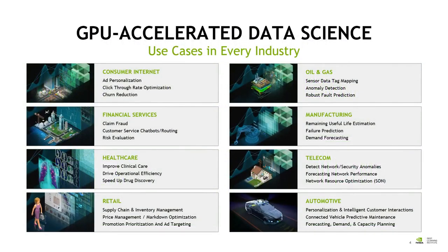Many companies, organizations, and even governments are realizing that accelerated data science can help them be more effective and more efficient. Here you can see a partial list of the industries and use cases where GPU accelerated data science can have a big impact. In healthcare, for example, accelerated data science can be used to better predict disease drivers with genomic medicine, improve health outcomes through analysis of electronic medical records, and predict the best care or treatment for a wide range of health conditions.